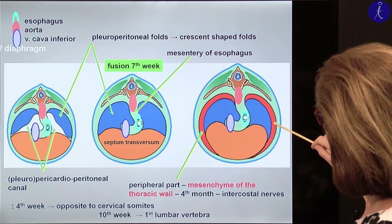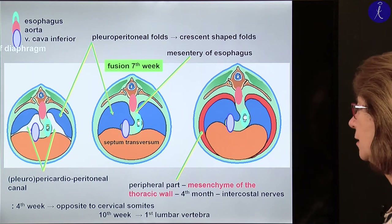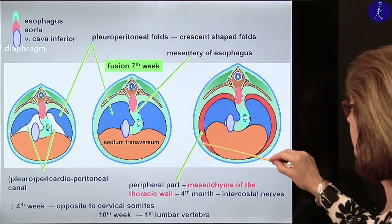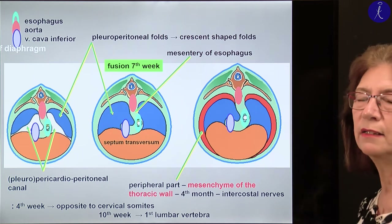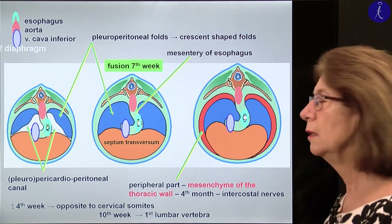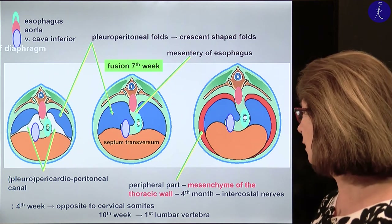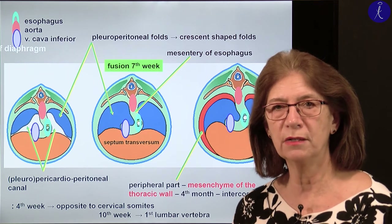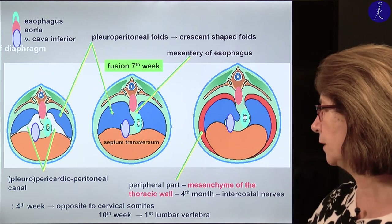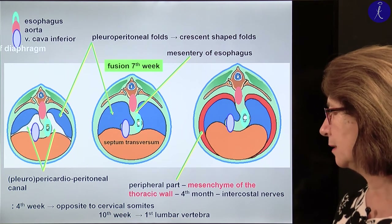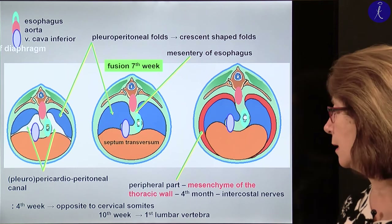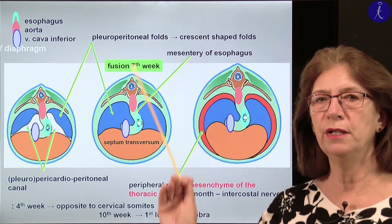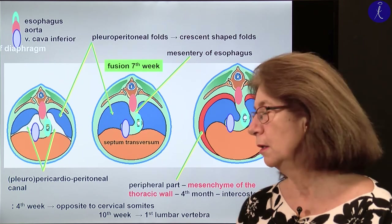In the end of the third and beginning of the fourth month, mesenchyme from the thoracic body wall will also contribute to these connective tissue territories. This explains that in the sensory innervation — only the sensory innervation — the intercostal nerves also participate. As I told you at the beginning, when the septum transversum starts to develop it is opposite the fourth cervical somite segment, but by the tenth week it will be at the level of the first lumbar vertebra. Take care: this is the origin, not the projection of the diaphragm onto the anterior body wall.